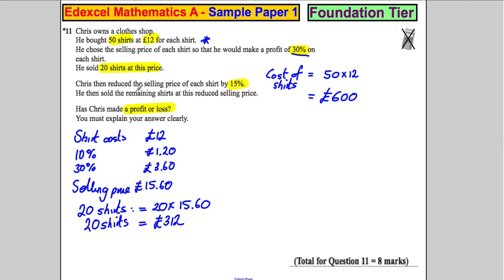Now it tells us he sold the remaining shirts at a 15% discount on that. So we have to work out a 15% discount. So if the shirt costs £15.60, 10% of this would be £1.56.